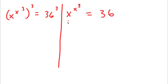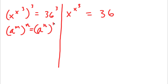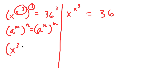If I have something in the form a to the power of m to the power of n, this is the same thing as a to the power of n to the power of m — I can swap the order of the exponents. So x to the power of x to the power of one-third to the power of 3: thinking of x to the power of one-third as m and 3 as n, this becomes x to the power of 3 to the power of x to the power of one-third, still equal to 36 to the power of 3.